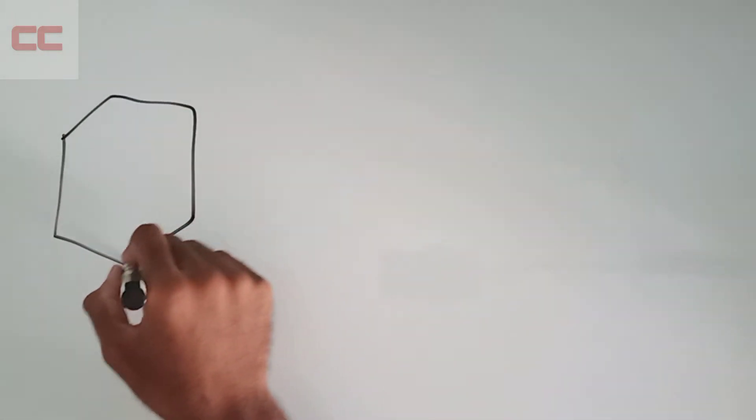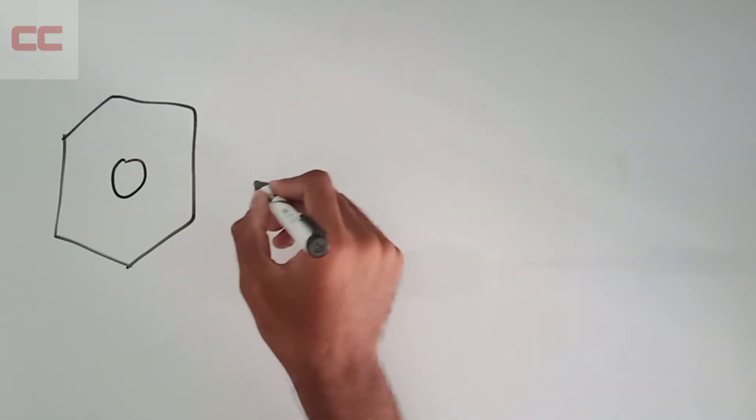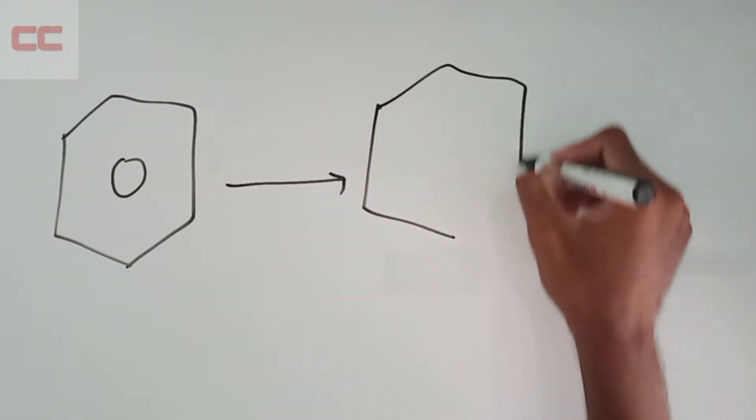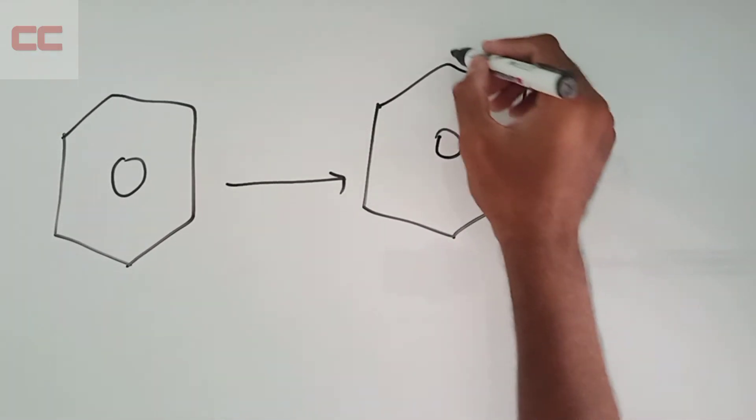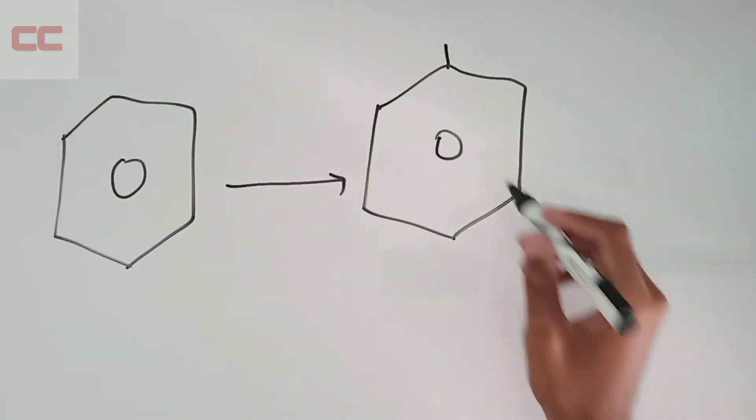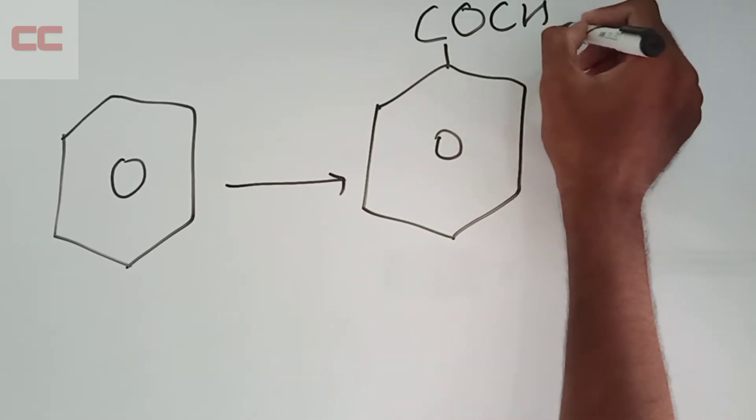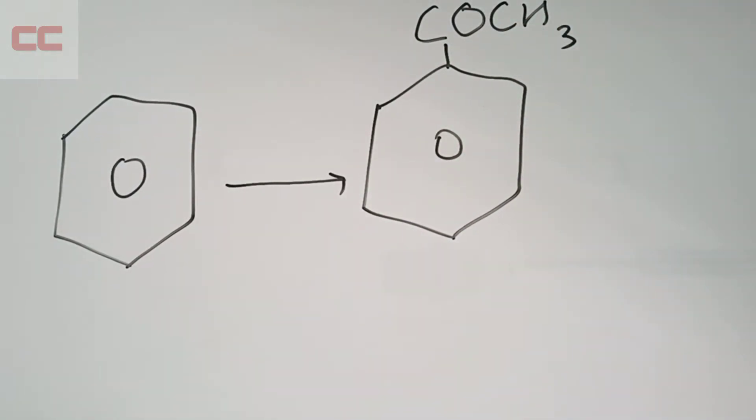Hello everyone and welcome to our channel Chemistry Class. Today we will be learning how to convert benzene into acetophenone. Most of you must have known the structure of acetophenone - it is COCH3 which is attached to the benzene ring.